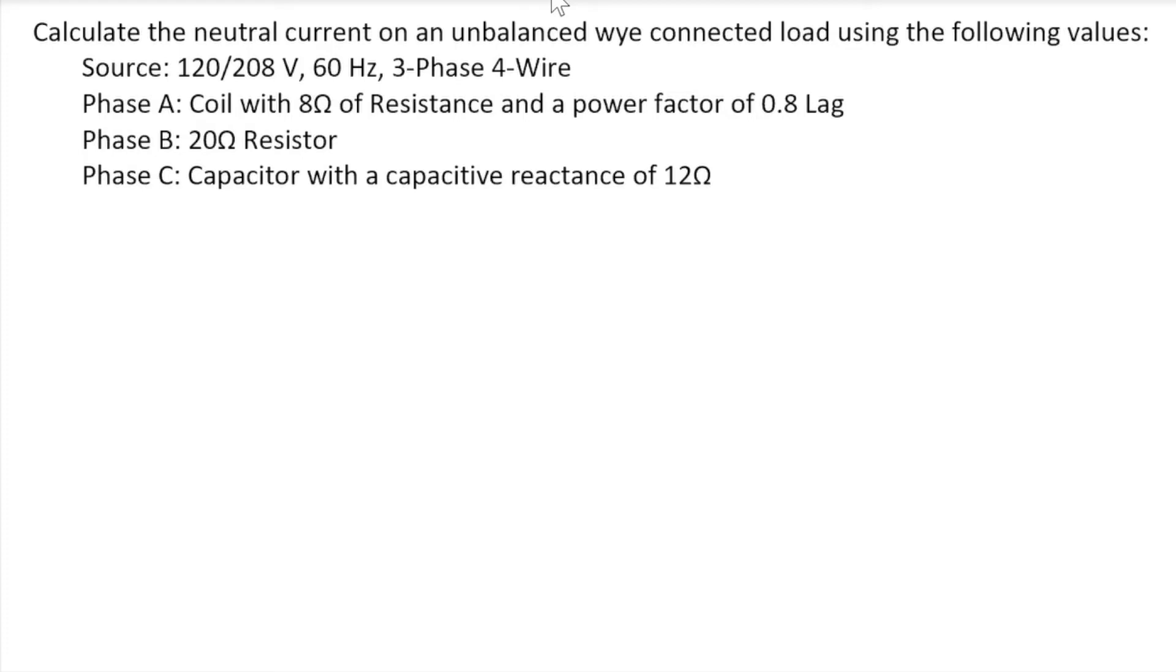Phase A is a coil, eight ohms of resistance, power factor of 0.8. Phase B is 20 ohm resistor, and phase C is a capacitor with a capacitive reactance of 12 ohms.